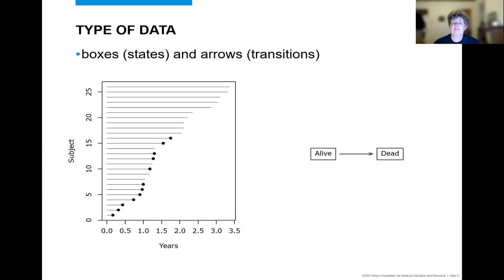Another way to think about this data is to draw a diagram from two boxes. Subjects are in the first box until they experience the event when they move to the second box. The boxes typically are called states, and the arrows are called transitions. Classical survival analysis, then, is really just the simplest type of multi-state model with two states.